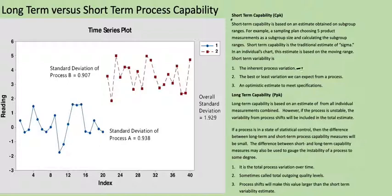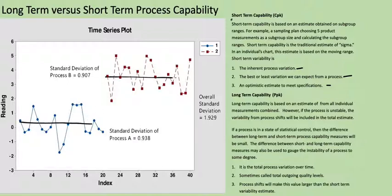So it's really the inherent process variation that we're trying to calculate — it's the best or least variation we can expect from a process, and it's a very optimistic estimate to meet the specifications. In comparison, with long-term variability, you're taking not only the amount of variability here and here — you're throwing everything into a big bucket and calculating the standard deviation, including any effects that result from this process shift.